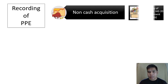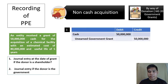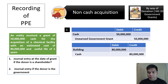Now let's assume the donor is the government. We follow IAS 20 on government grants. Since this is related to an asset, the proper entry at the date of grant is: debit Cash 50 million (the amount of the grant), credit Unearned Government Grant — a liability account — 50 million. That 50 million will be recognized over time as income, in line with the depreciation of the related asset. Based on the condition requiring purchase of the chemical facility worth 80 million: debit Building 80 million, credit Cash 80 million.